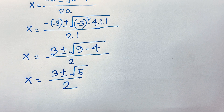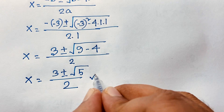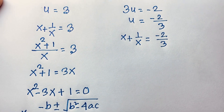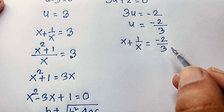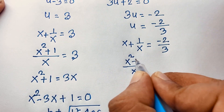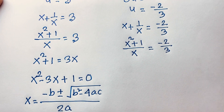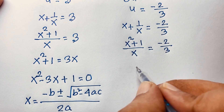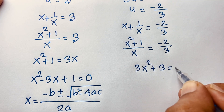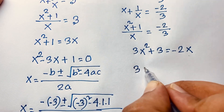This first case gives a real solution. For the other case, x plus 1 over x equals minus 2 over 3. Multiplying through by x: x squared plus 1 equals minus 2x over 3, and multiplying by 3 gives 3x squared plus 3 equals minus 2x, so 3x squared plus 2x plus 3 equals 0.